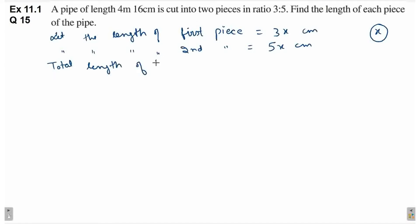Total length of pipe is equal to 4 meter 16 centimeter. Ab is length ko hum centimeters mein convert karenge.